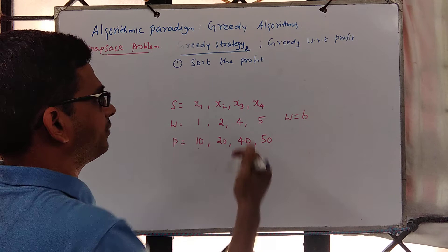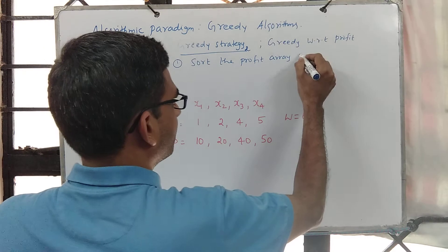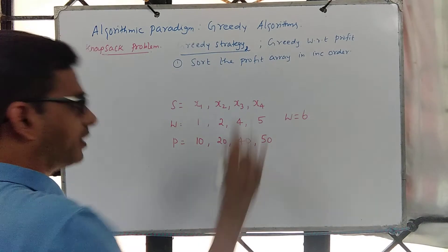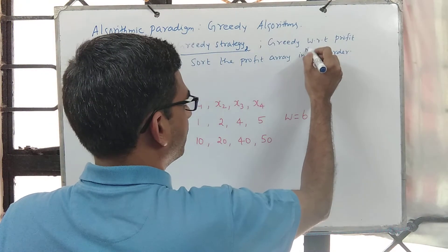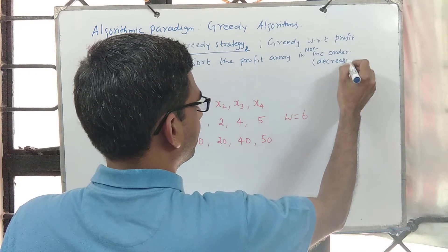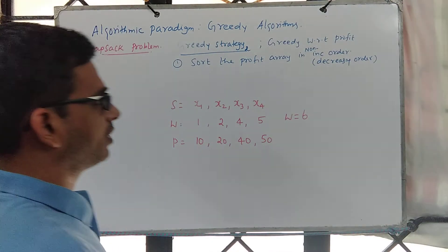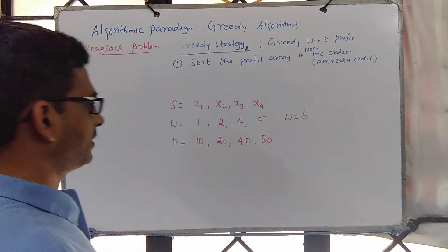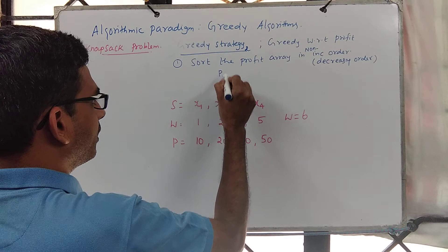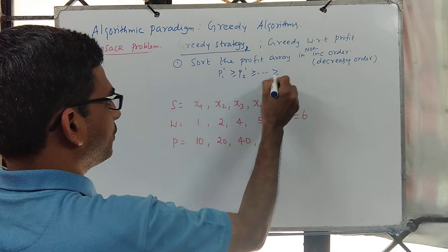So sort the profit array in increasing order, or in the other way, it is non-decreasing order or decreasing order. If there are duplicates it is non-increasing, otherwise it is decreasing order, which means you get to see like p1 prime is greater than or equal to p2 prime, so on up to pn prime.